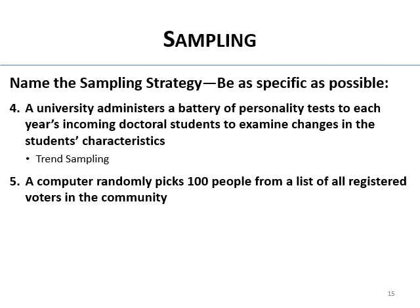A computer randomly picks 100 people from a list of all registered voters in the community. This is the most simple type of random selection — a true random sample.